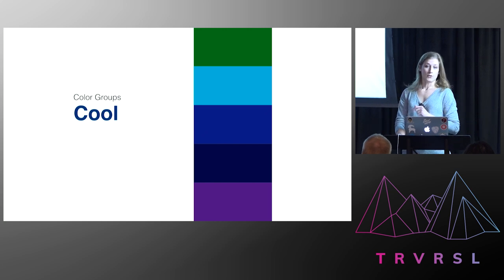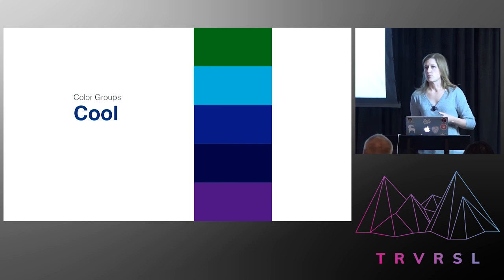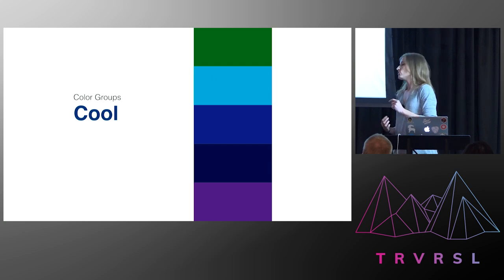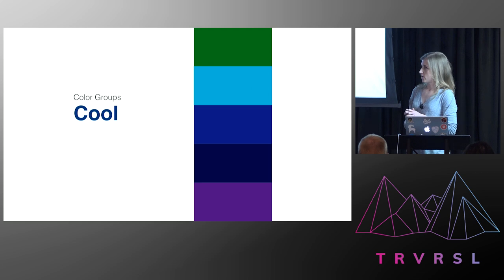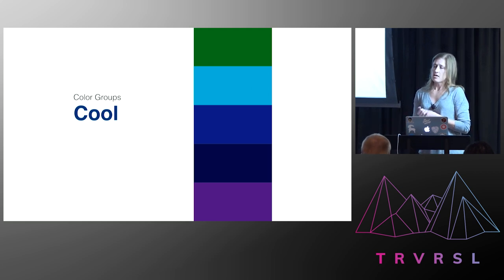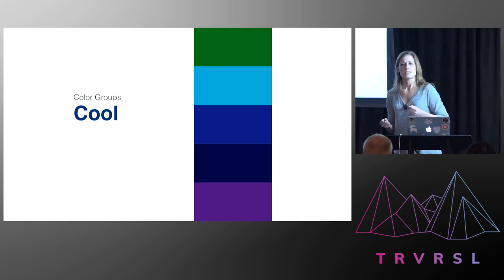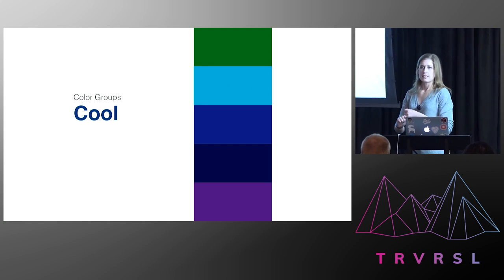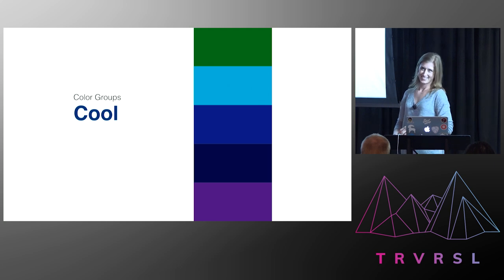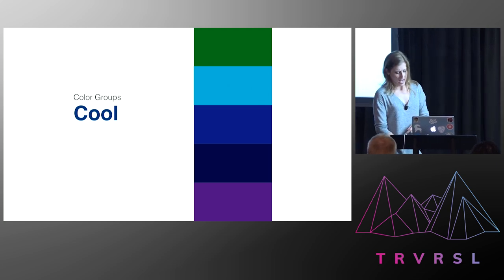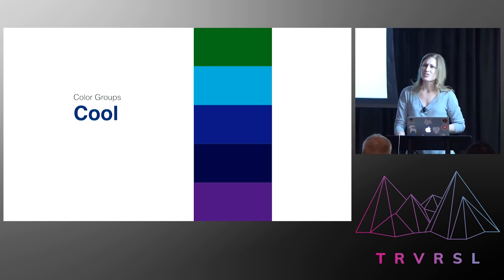Next we have cool color groups. Colors in this group are thought to be a little bit calmer and more relaxing. They're often associated with stability and composure. If you think about the kinds of brands using these colors, they often really want you to trust them — so you'll see a lot of banks, hospitals, insurance companies, and Facebook. They really just want you to feel like you're safe here.